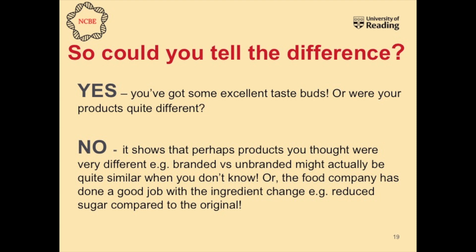So could you tell the difference? How many of you got the right answer? How many people in your family got the right answer? If you did, that's amazing — you've got really good taste buds and were able to distinguish between the two products. If you weren't able to tell the difference, maybe that's just because the company has done a really good job. Sometimes companies compare their product to, for example, a supermarket own brand, to see how well they compare — maybe they've done really well in matching the sensory characteristics between the two products. I hope you've enjoyed today and enjoyed being sensory scientists. Please tune in for the next video, which is going to be looking at why apples and potatoes go brown when left outside. Thank you.